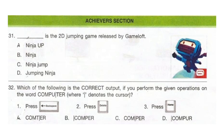The next section is the Achievers section, where each question carries 2 marks. Question 31: Dash is the 2D jumping game released by Game Loft. The correct answer is option A, Ninja Up. Question 32: Which of the following is the correct output if you perform the given operations on the word 'computer' where the line denotes the cursor? You have to first press backspace, then press delete, then press home. The correct answer is option B.